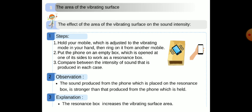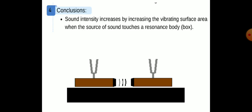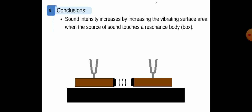Number three: the area of the vibrating surface. You should do this experiment — the resonance box increases the vibrating surface area. As you see in this picture, sound intensity increases by increasing the vibrating surface area when the source of sound touches a resonance box.